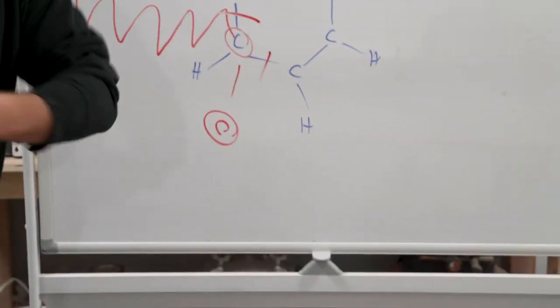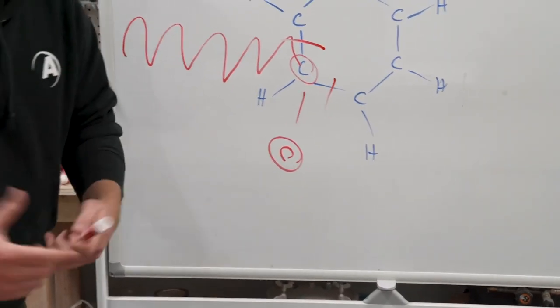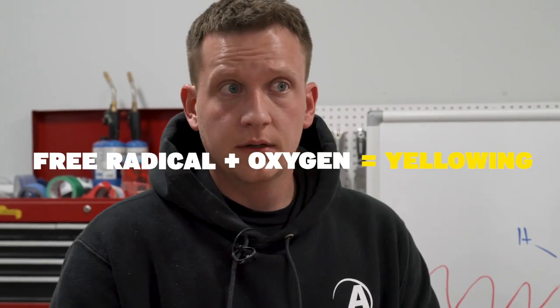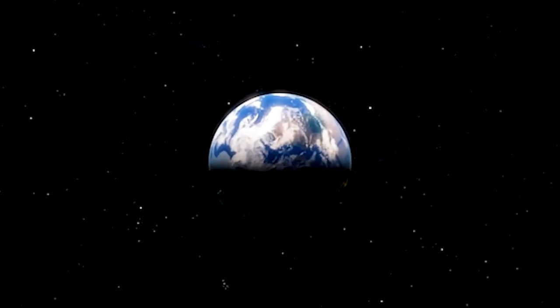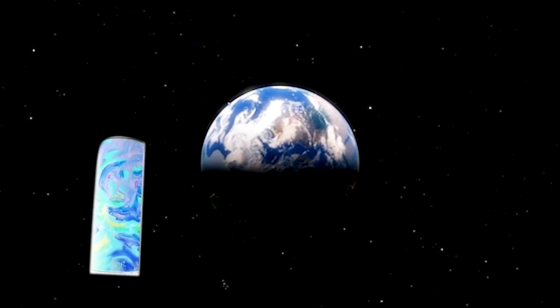Now that free radical — how does it cause yellowing? It's all on its own, it's an agent of chaos, and it's looking for something to bond to. What does it bond to? Oxygen — it bonds to oxygen within the air. So if you have UV light causing free radicals within your project and it's exposed to oxygen, you're going to get yellowing. So if we had no oxygen in the environment, would we still have yellowing? No. So if I could pour a tumbler in outer space, even though it's in direct contact with the sun's beams, would it yellow? No — there's no oxygen.